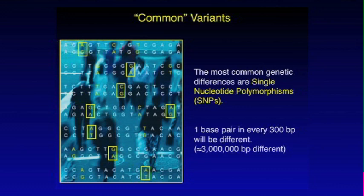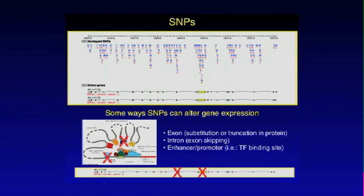The most common type of genetic variation between people are single nucleotide polymorphisms, or SNPs. Going along someone's genome, occasionally one person will have a C in a position and somebody else will have a G, and then everything else is identical for a stretch, and then someone will have an A and someone will have a G. We call them polymorphisms because in a large population you see that some people have one base and some people have another. On average, there's about one base pair difference every 300 base pairs in the genome — still a lot — and some of them have effects and some of them don't.